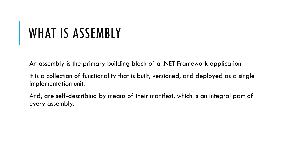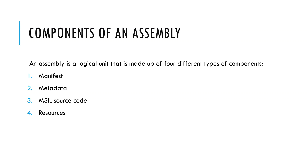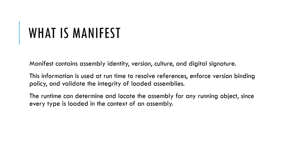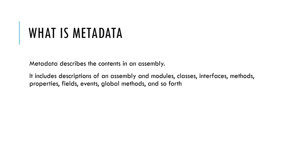What is an assembly? An assembly is the primary building block of a .NET Framework application. It is a collection of functionality that is built, versioned, and deployed as a single implementation unit. Assemblies are self-describing by means of their manifest, which is an integral part of every assembly. What are the components in an assembly? An assembly as a logical unit has a manifest, metadata, MSIL code, and resources. The manifest contains assembly identity, version, culture, and digital signature. This information is used at runtime to resolve references, enforce version binding policy, and validate the integrity of the loaded assembly.